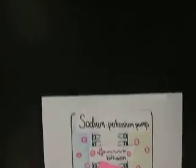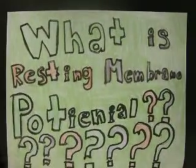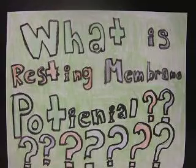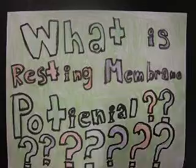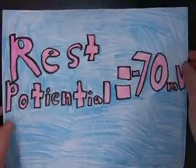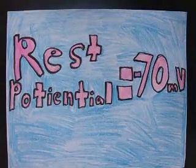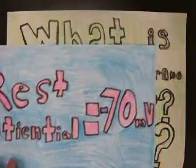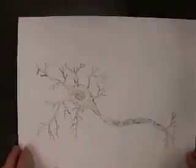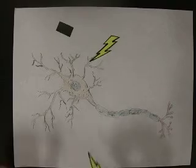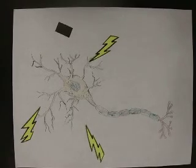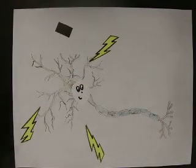Now you all know about the resting membrane potential, but what exactly is it for? The slightly negative charge of negative 70 millivolts keeps the neuron ready for stimulation from electrical signals. While the neuron is stimulated — well, that's another story. The end.